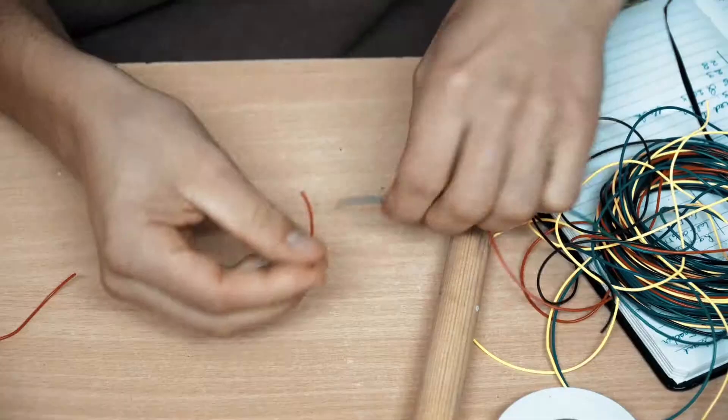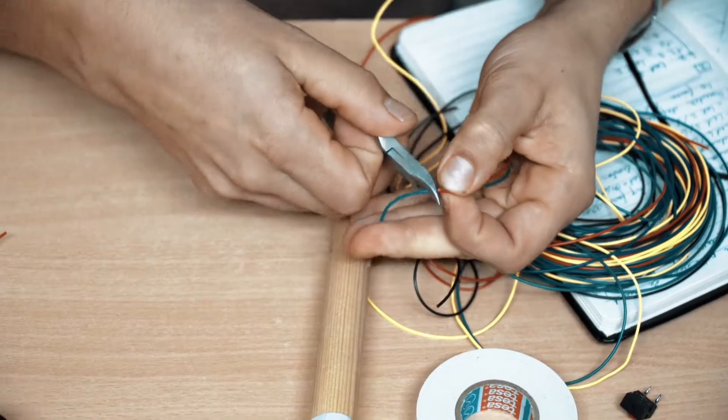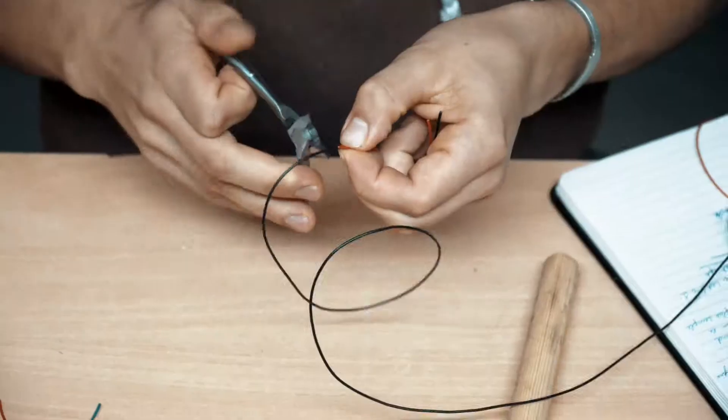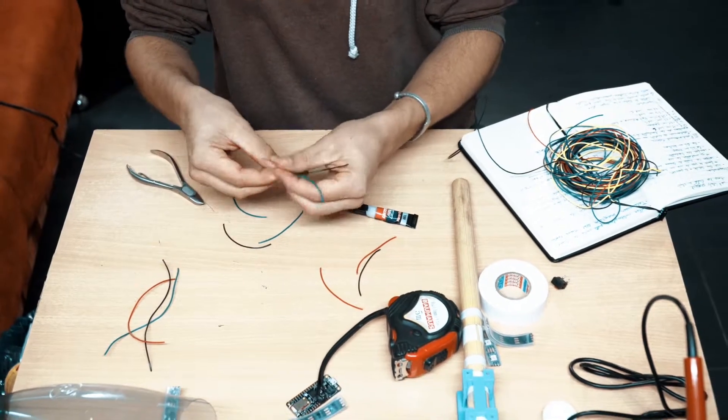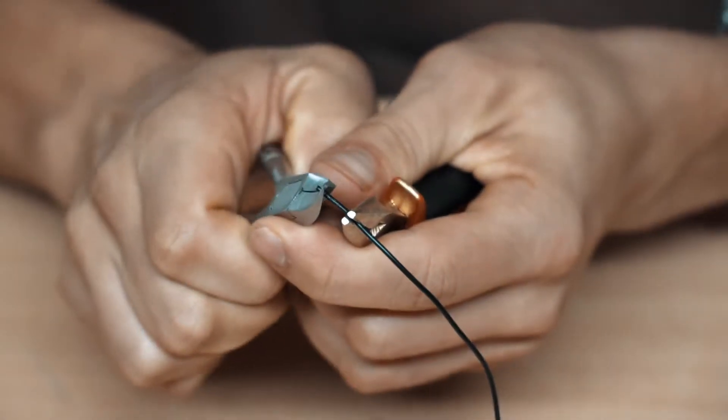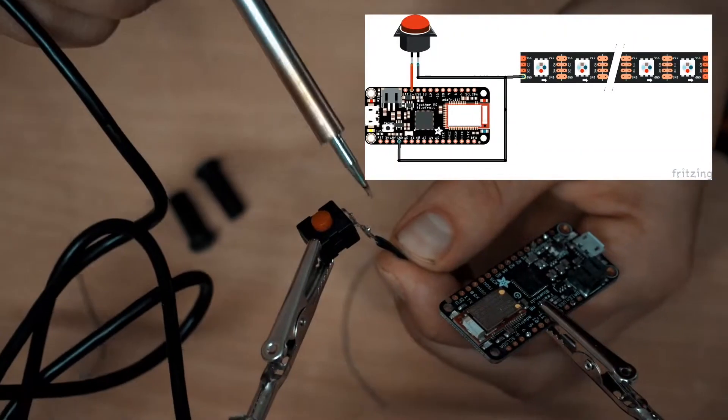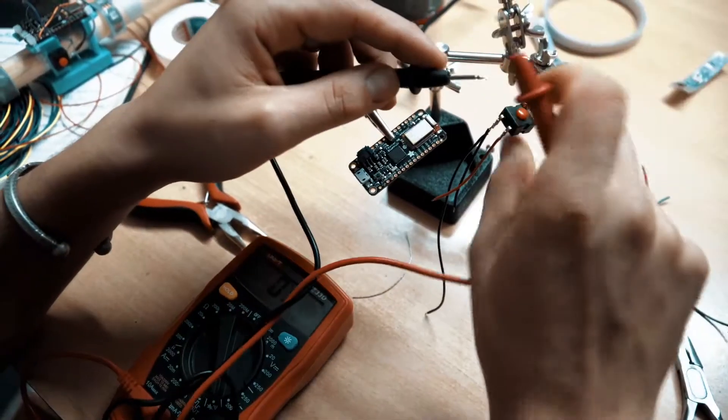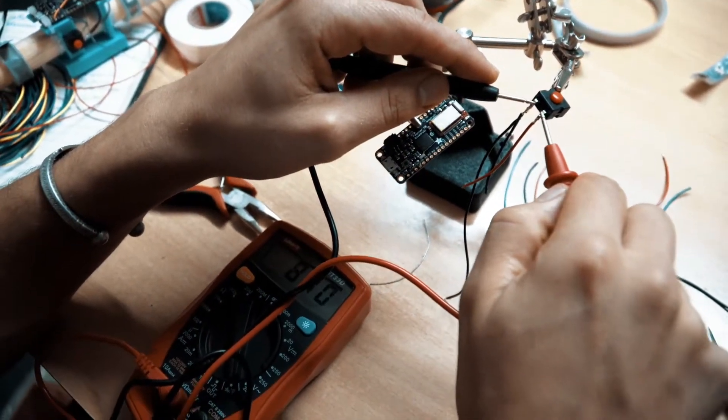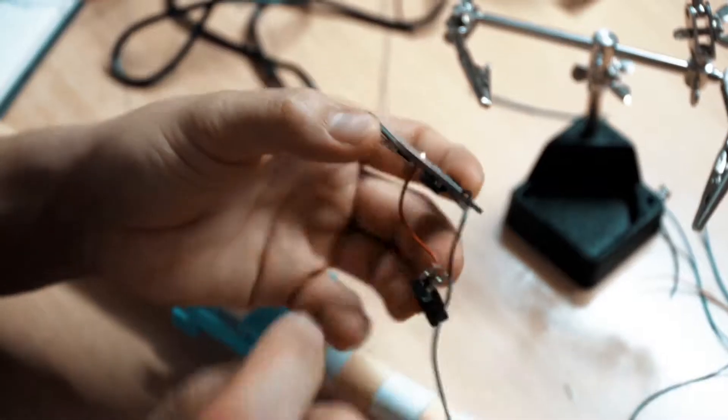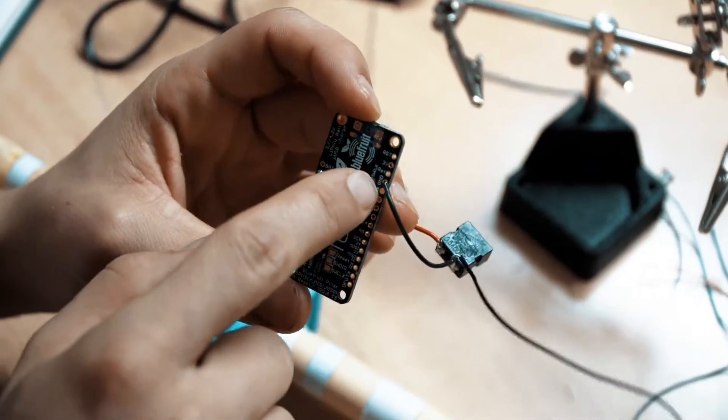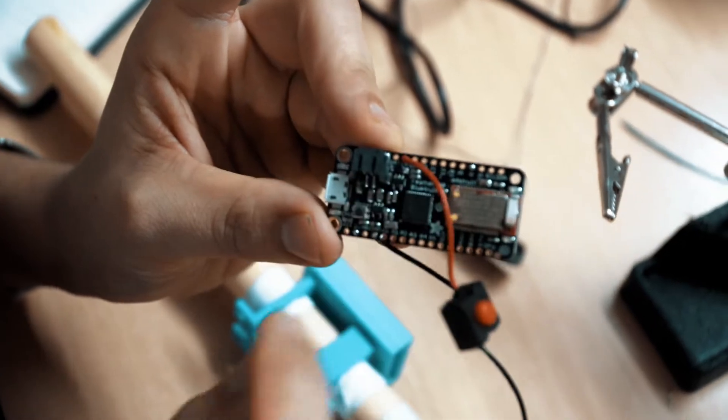We're gonna solder everything before putting this on the club. Solder the on-off switch: one pin goes on EN and the other pin goes on ground. As you see, I got 2 wires on the ground pin of my on-off switch. One of these wires goes to feather and the other goes to the LEDs.